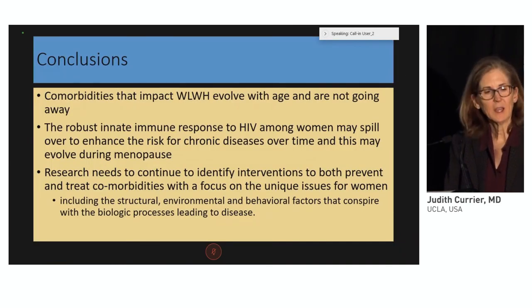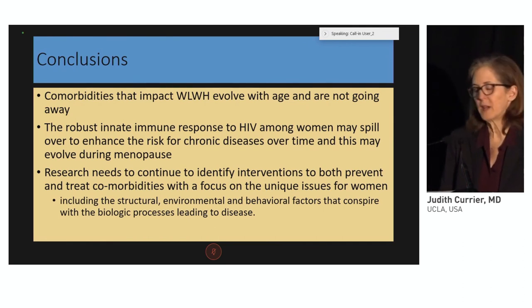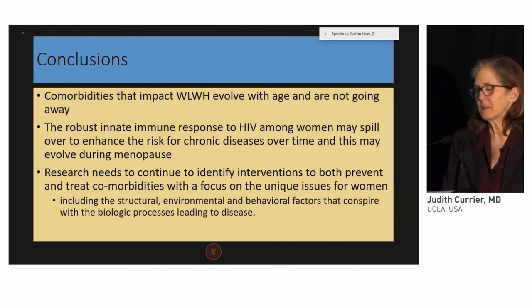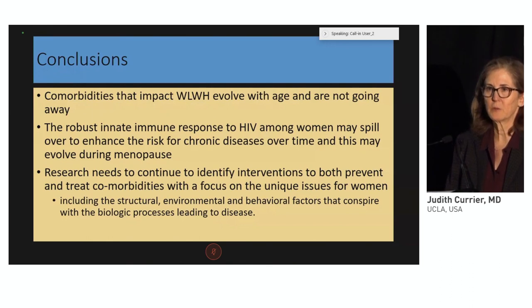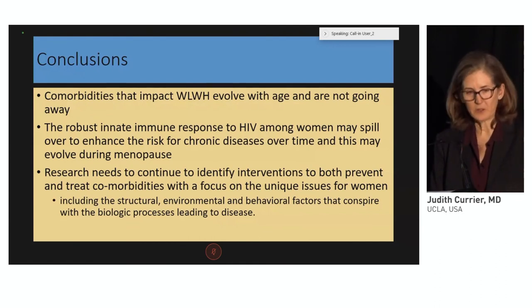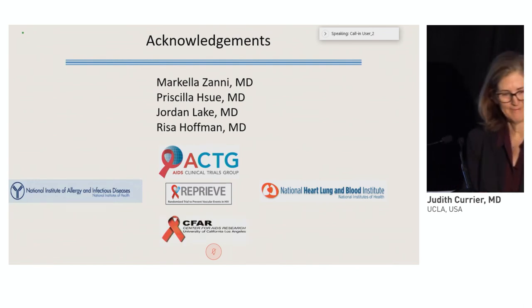In conclusion, it's very clear that comorbidities are here to stay, and as the population living with HIV ages, this will not go away. These robust immune responses may have unintended consequences, but there are things we can do to mitigate them. We need research to continue to identify interventions to both prevent and treat these comorbidities, including the structural, environmental, and behavioral factors that conspire with the biologic to lead to disease. Thank you for your attention.